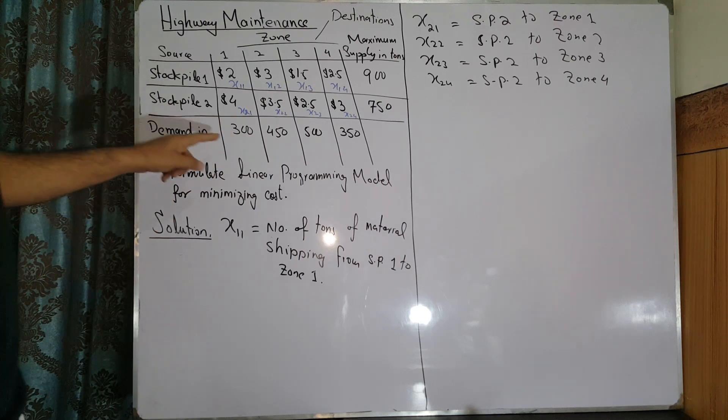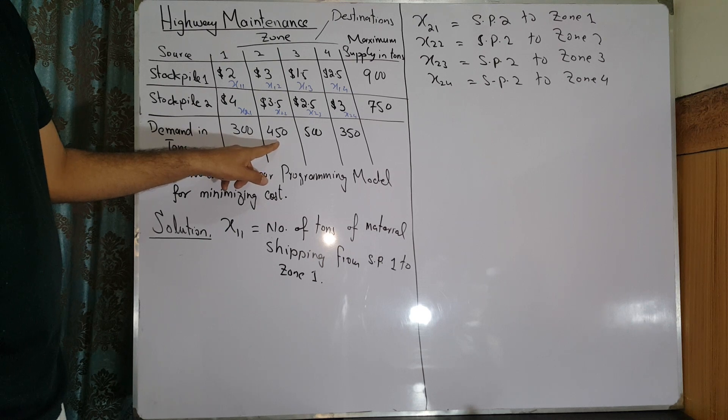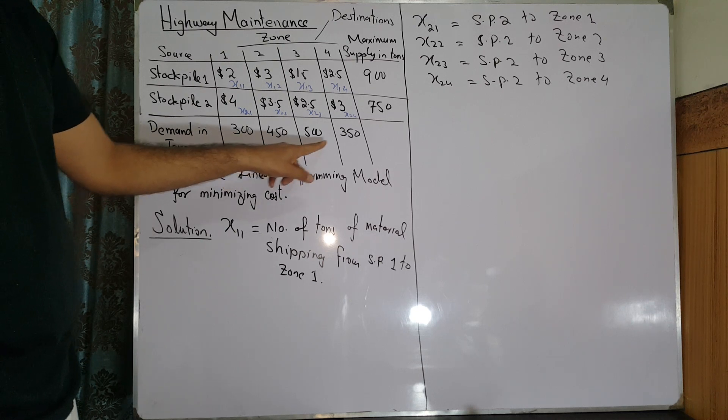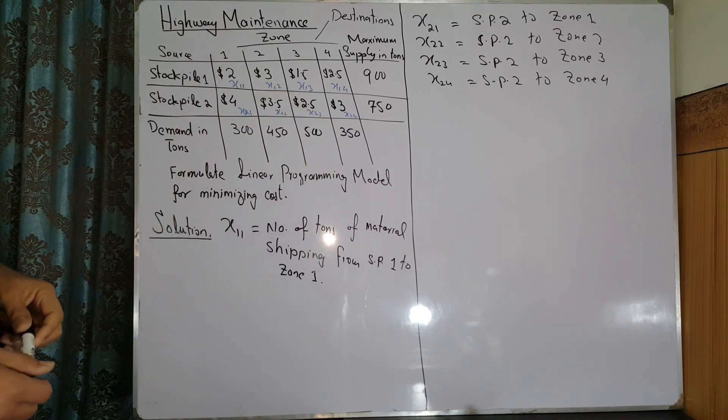The demand is: zone 1 requires 300 tons, zone 2 requires 450 tons, zone 3 requires 500 tons, and zone 4 requires 350 tons.